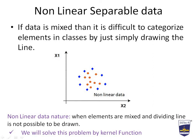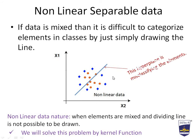We understood linearly separable data, but what happens when non-linear separable data comes into consideration? If data is mixed, it is difficult to categorize elements into classes by simply drawing a line. When the data is mixed together, we cannot draw a single line to isolate and divide elements into two classes. If we draw a line, this hyperplane misclassifies the elements. When elements are mixed and a dividing line is not possible, we solve this problem using a kernel function.